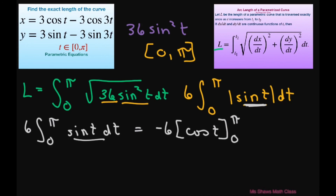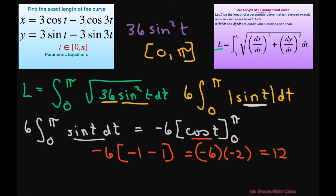At pi we get negative 6 times cosine(π) which is negative 1, then subtract negative 6 times cosine(0) which is 1. So we have negative 6 times negative 1 minus negative 6 times 1, which equals negative 6 times negative 2, giving 12. So 12 is the exact length of the curve. Thank you, have a nice day.